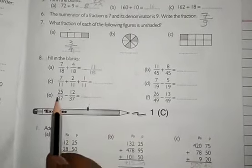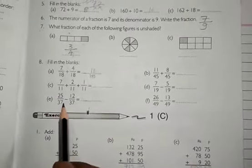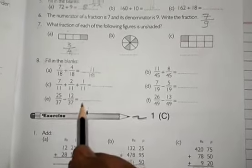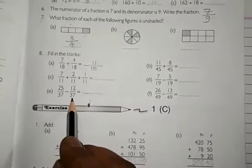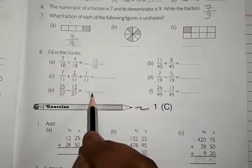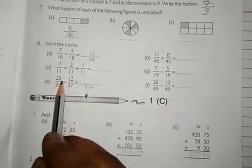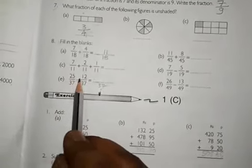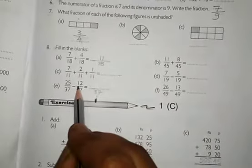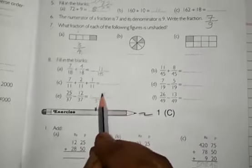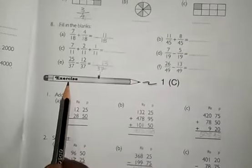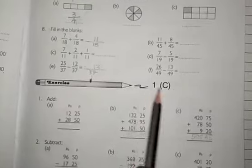Question number E. 25 by 37 minus 12 by 37. Denominator is 37, so we write 37 and subtract 12 from 25 and we get 13. You do like this. Now see exercise 1C.